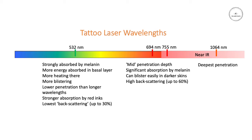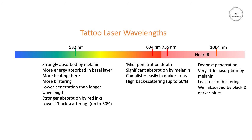The 1064nm, which is the Nd:YAG fundamental line, gives us the deepest penetration into the skin. There is very little absorption by melanin, so you don't tend to damage the melanocytes or the melanin granules, and therefore we get the lowest risk of blistering with this wavelength. It's very well absorbed by black and dark blue ink, so it's good for those colors, but it still has a pretty high level of back scattering — potentially up to about 55% or more — so we do lose a lot of energy through back scattering coming back out of the skin.